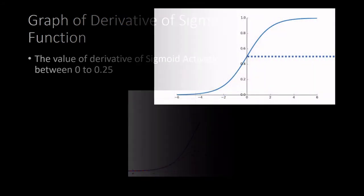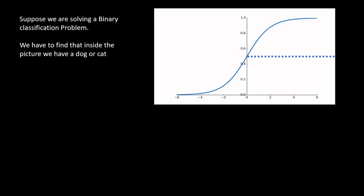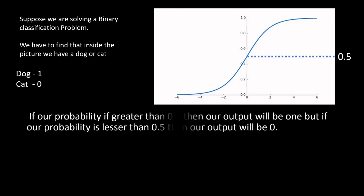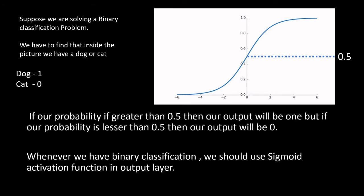Remember one thing: the output represents our probability. We should use sigmoid in the output layer when we are solving a binary classification problem. For example, suppose we have two classes — dog and cat — where 1 represents dog and 0 represents cat. If our probability is greater than 0.5, the output will be dog; if the output is less than 0.5, the output will be 0 (cat).